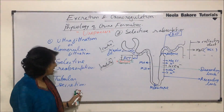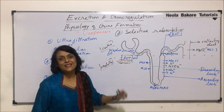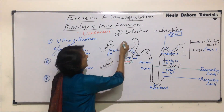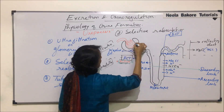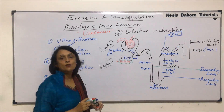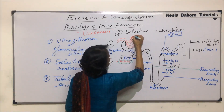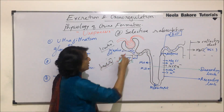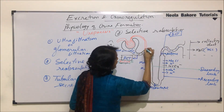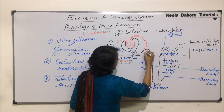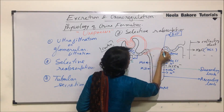We will now take up the third step of urine formation, that is tubular secretion, and we are going to use the same diagram but add a few things. There is the afferent arteriole, then the capillaries, and the efferent arteriole. The efferent arteriole comes down and surrounds the tubule parts, that is PCT and DCT. These capillaries around the tubules are what we call the peritubular capillaries.